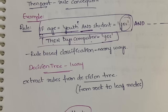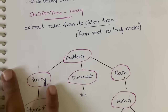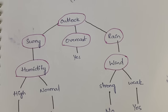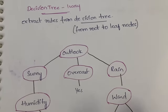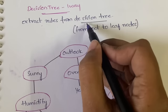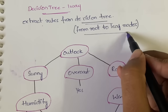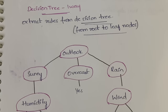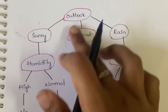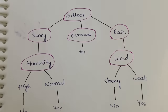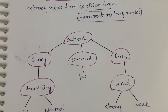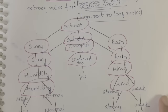With a decision tree, you will have a predefined tree, and from this tree you will be generating — that is, extracting — the rules. The rules should be extracted from root to leaf, meaning you start from the root and go to the leaf, covering each and every node while extracting the rules.